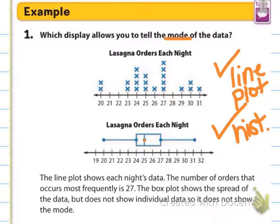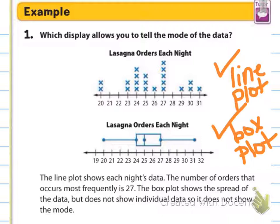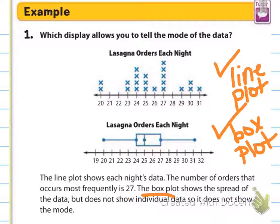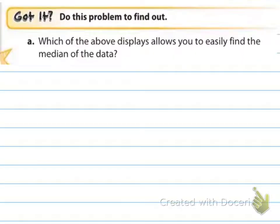A says: which of the above displays allows you to easily find the median of the data? Wait — am I saying histogram? I'm sorry. Not histogram — I meant box plot. So, box plot. Obviously in my box plot — I even said it here — the box plot shows the median in our actual set of information. It gives us our median. It also gives us our highest and lowest. So box plot.